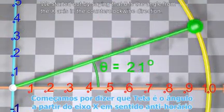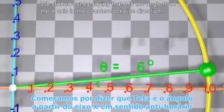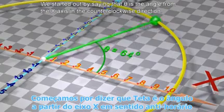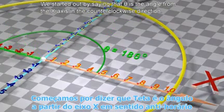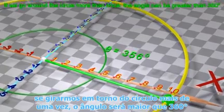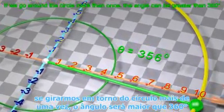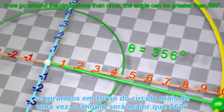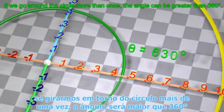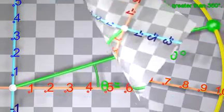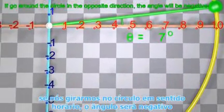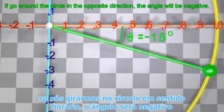We started out by saying that theta is the angle from the x-axis in the counterclockwise direction. If we go around the circle more than once, the angle can be greater than 360 degrees. If we go around the circle in the opposite direction, the angle will be negative.